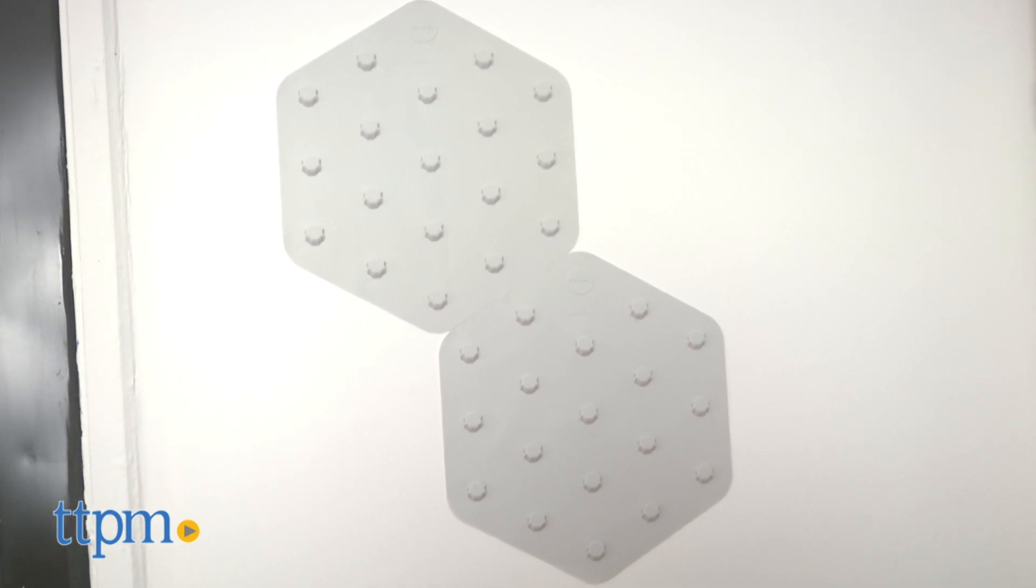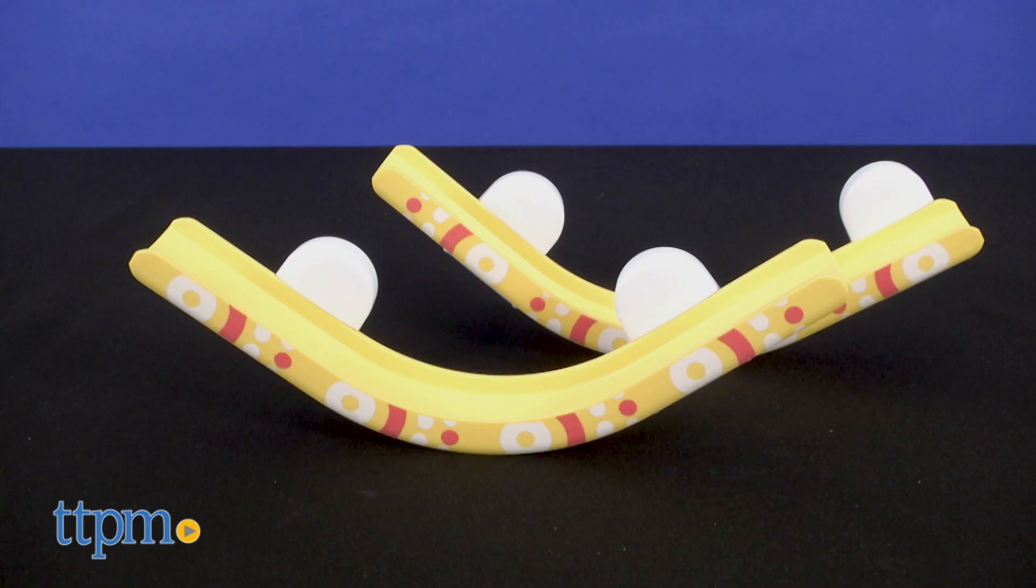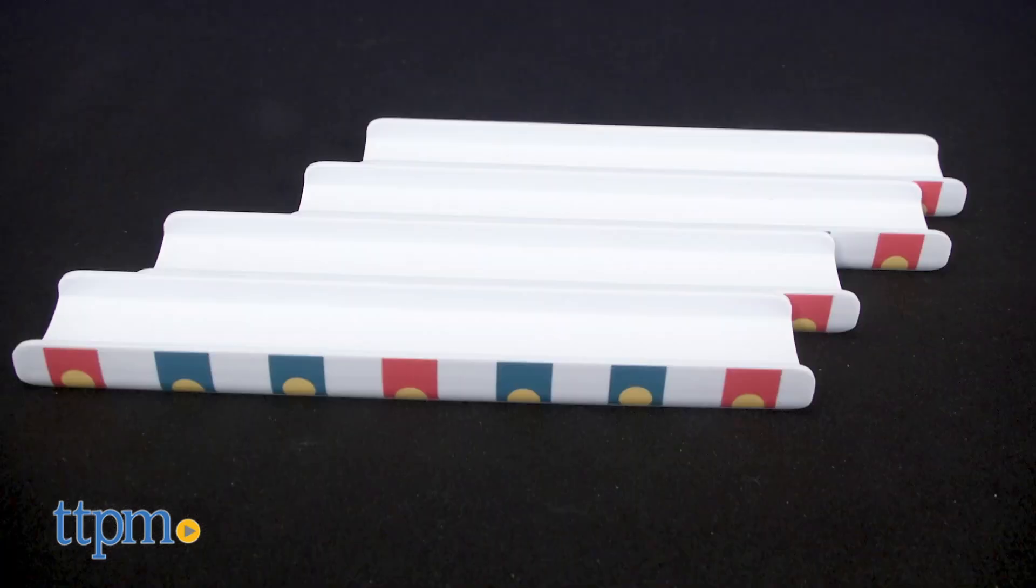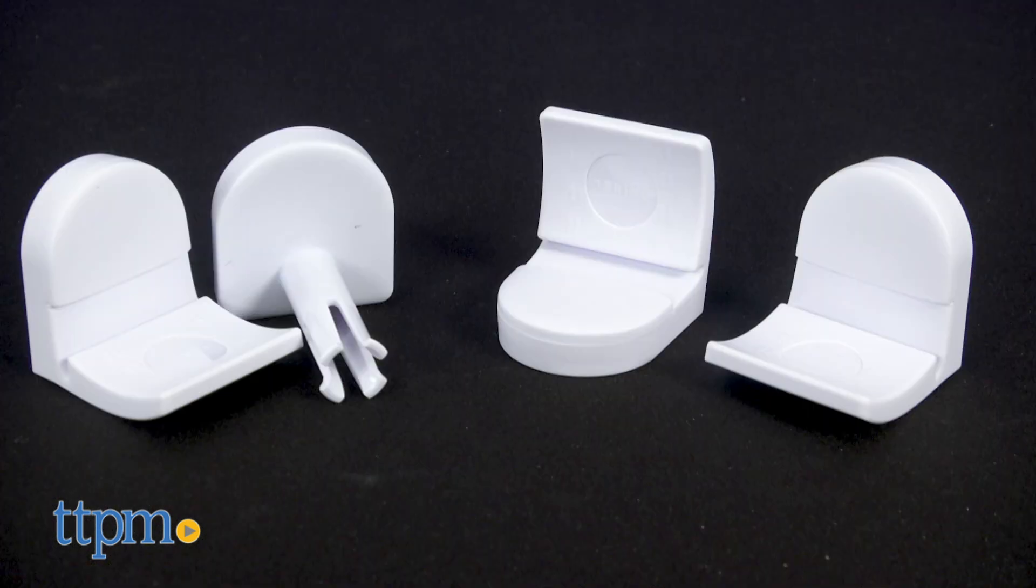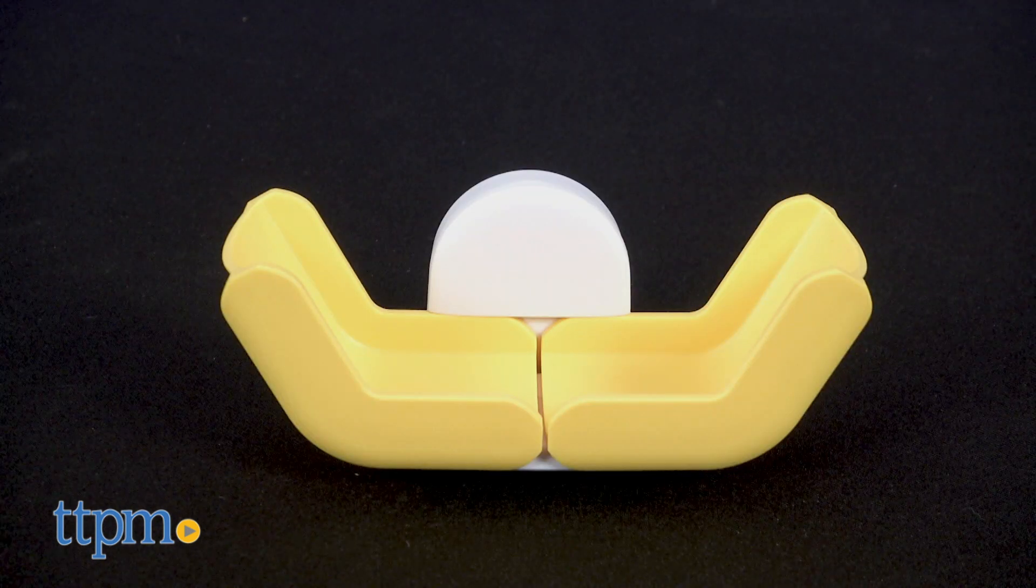So what do you get? Two silicone baseboards, two curvy tracks, two wooden balls, four straight tracks, eleven connectors, a seesaw, and two end caps.